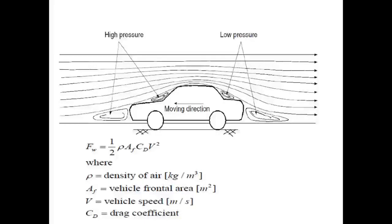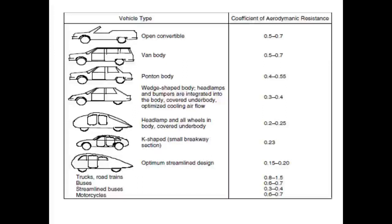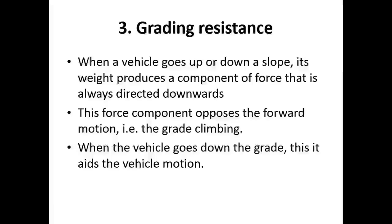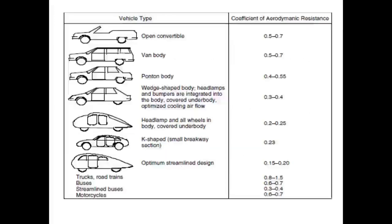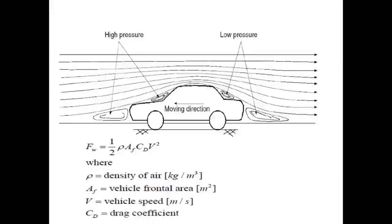The aerodynamic drag force is given by: F_w = ½ρ·A_f·C_d·v², where v is the vehicle speed. Different types of vehicles have different values of the coefficient of aerodynamic resistance C_d. In the full formula, v is taken as (v + v_w), where v is the vehicle speed and v_w is the wind velocity.